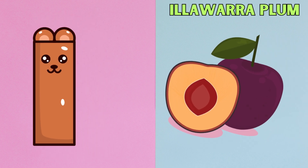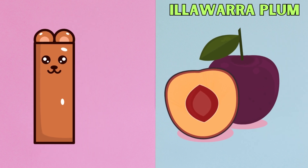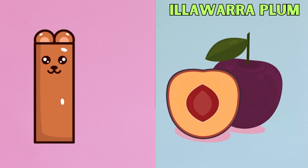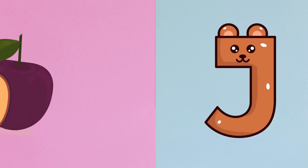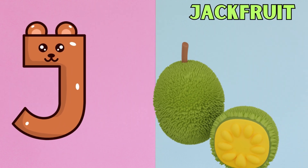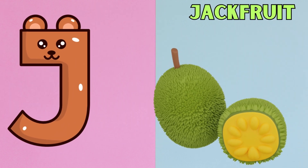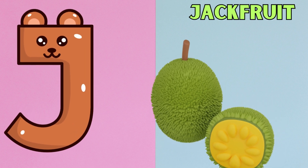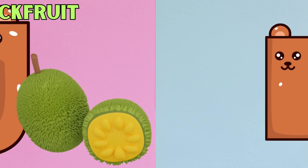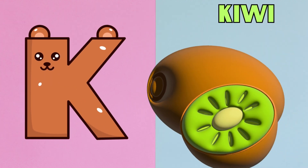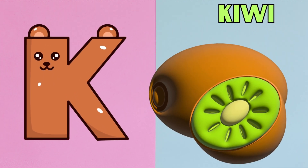I is for Illawarra Plum. I, I, Illawarra Plum. J is for Jackfruit. J, J, Jackfruit.